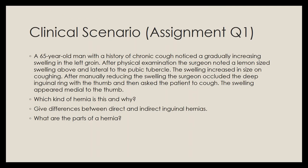Assignment: A 65-year-old male with chronic cough has a lemon-sized swelling above and lateral to the pubic tubercle that increases in size on coughing. After manual reduction, the surgeon occludes the deep inguinal ring with his thumb and asks the patient to cough; the swelling then appears medial to the thumb. Identify which kind of hernia this is and why, give the differences between direct and indirect inguinal hernias, and enumerate the different parts of a hernia.